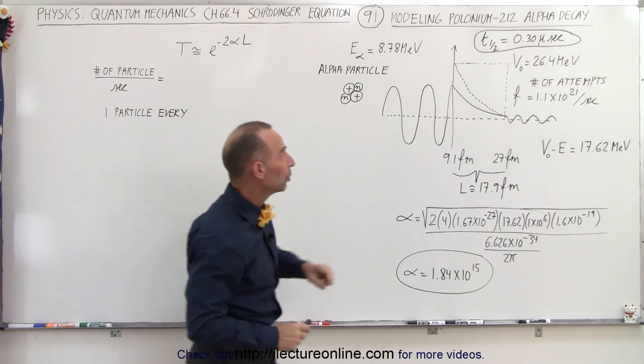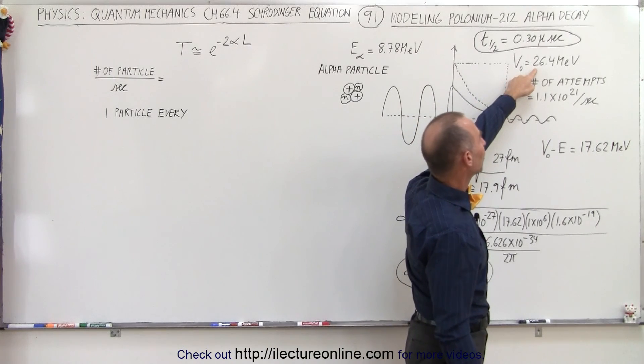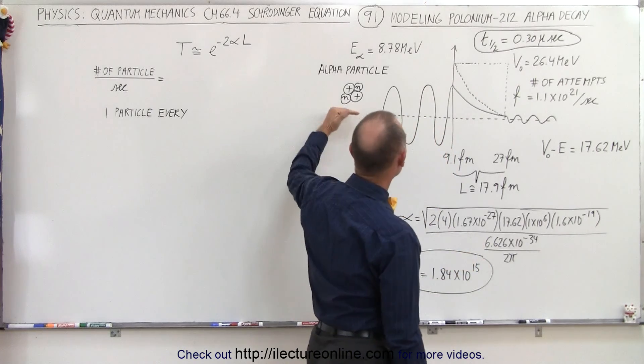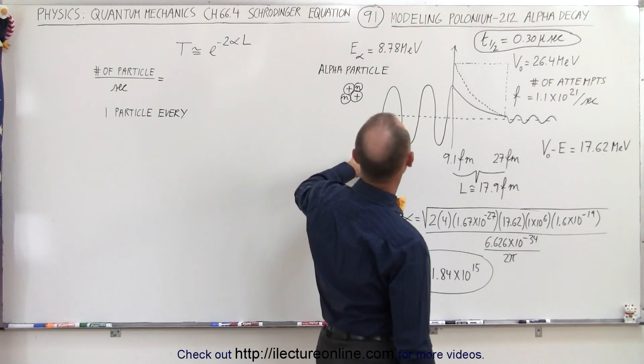We know that the potential barrier at its peak has a magnitude of 26.4 MeV, and we know that the alpha particle has an energy of 8.78 million electron volts.